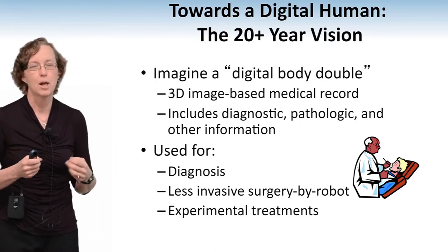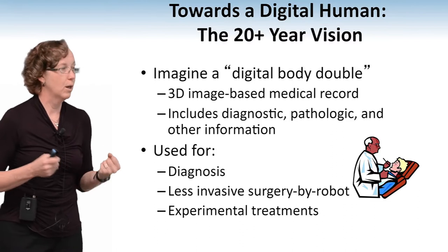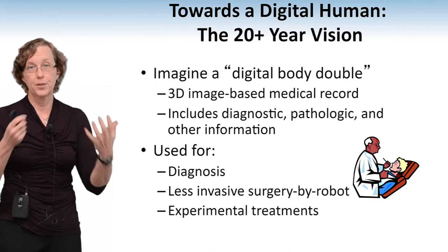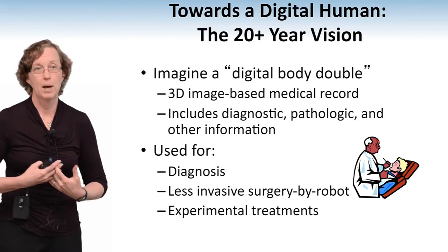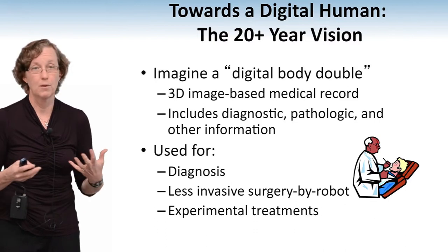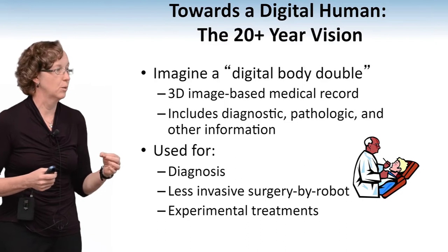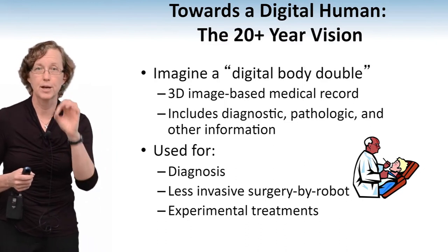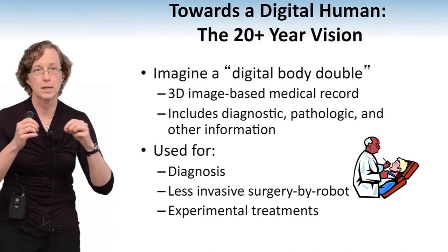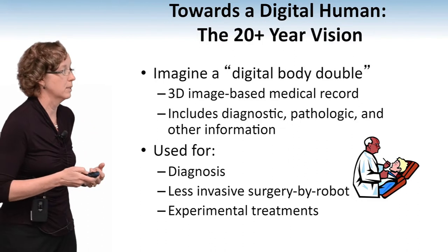Imagine that you have a digital body double — a digital record of all of your images from any kind of medical records, any medical tests you've done, pathology, information about your diagnostics, and information about whatever medications you're taking. You can use this for diagnosis, for less invasive surgery. If they understand exactly what your internal organs look like, they can design better prosthetic devices and understand how to perform surgery with robots.